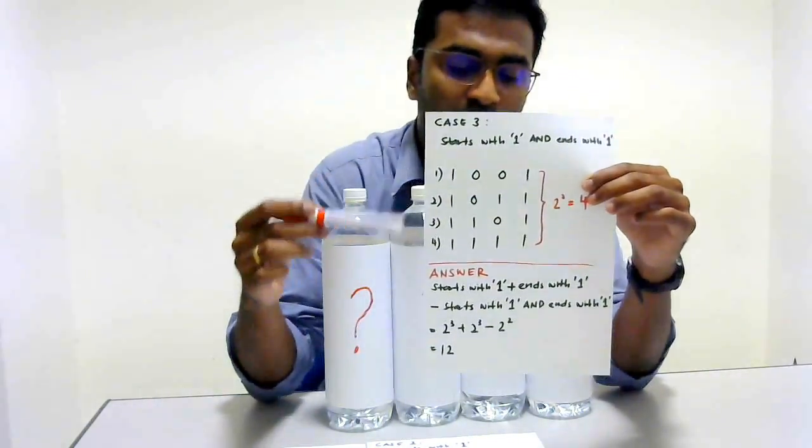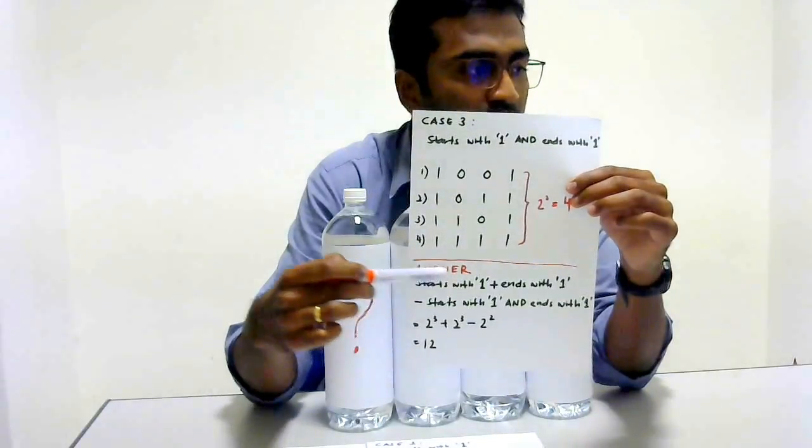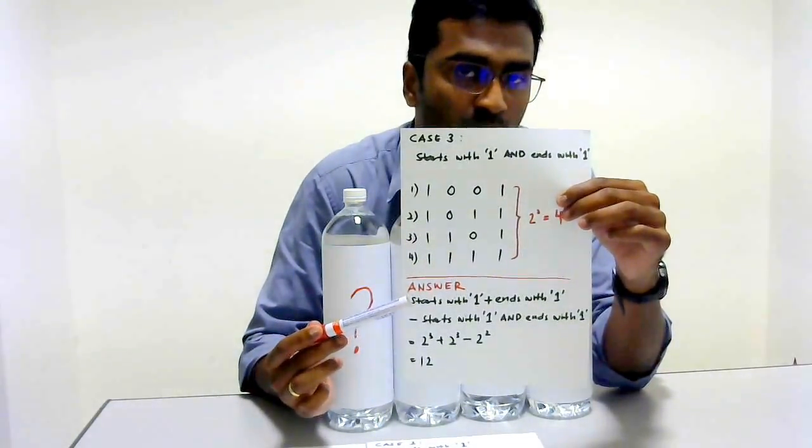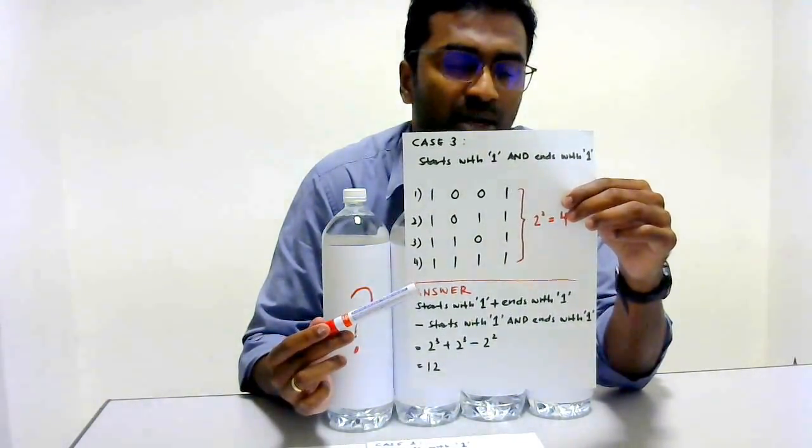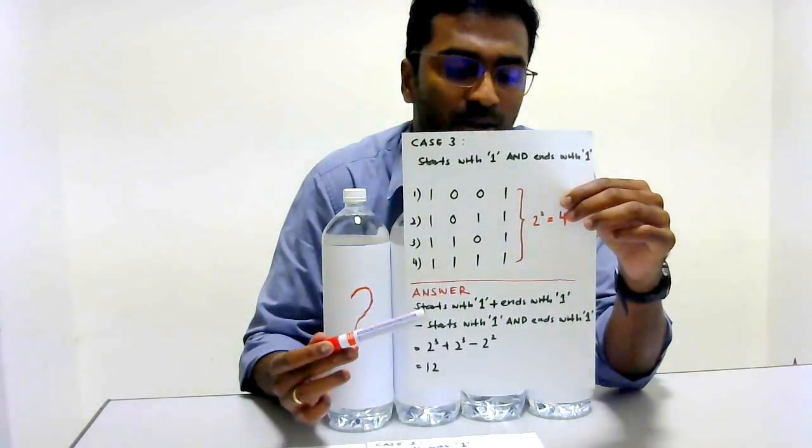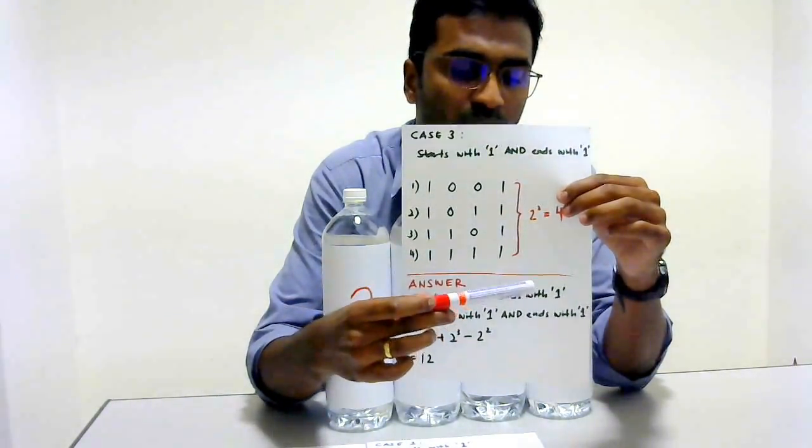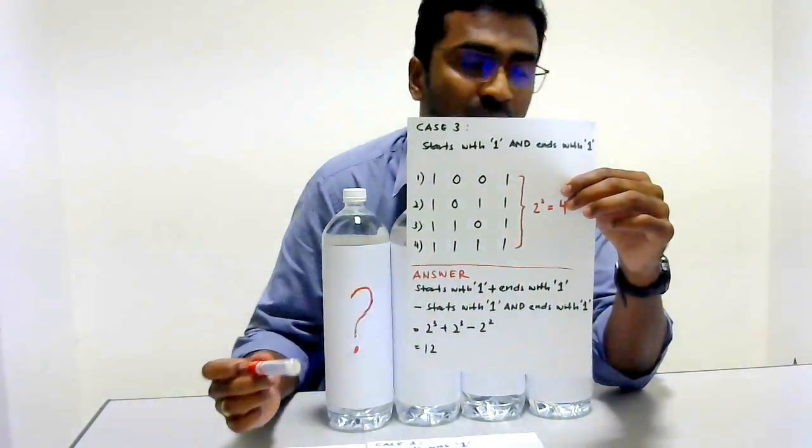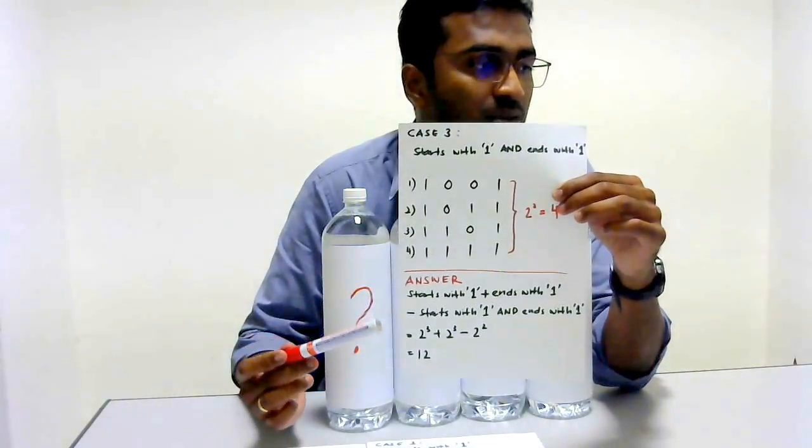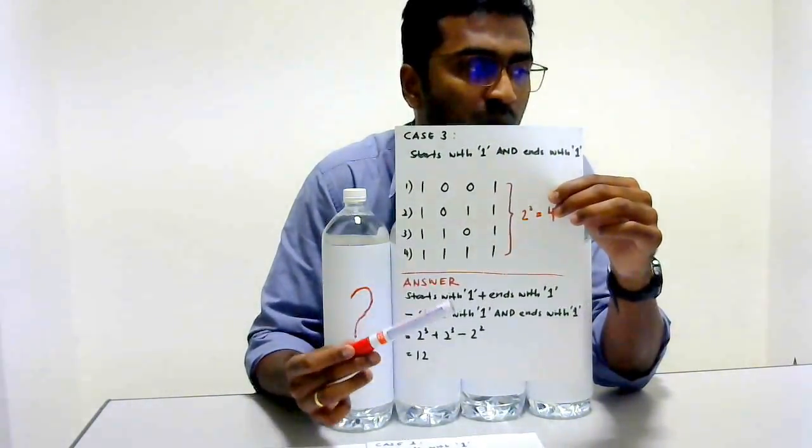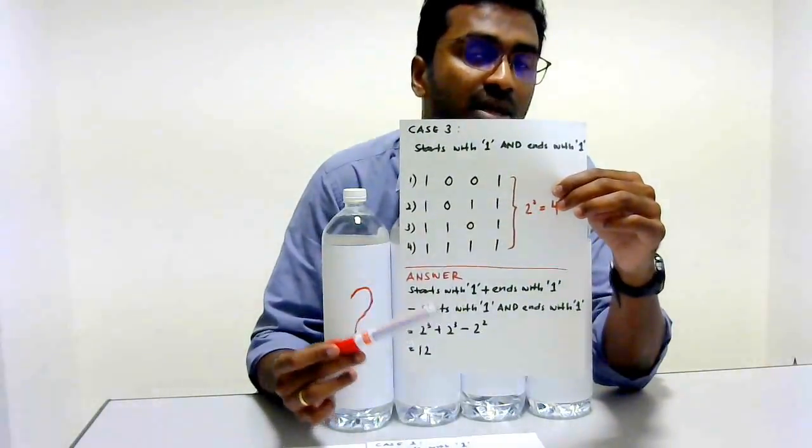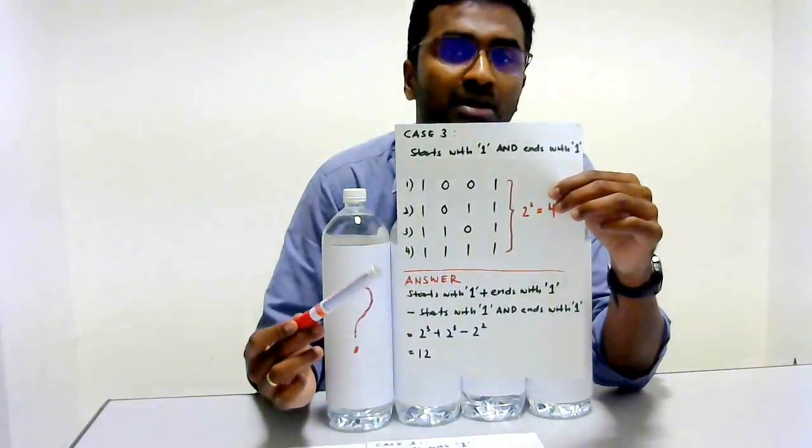So what we need to do is find all the strings that start with 1, that is our case 1, and strings that end with 1, that is our case 2, and then we minus the strings that start with 1 and end with 1, that is our case 3.